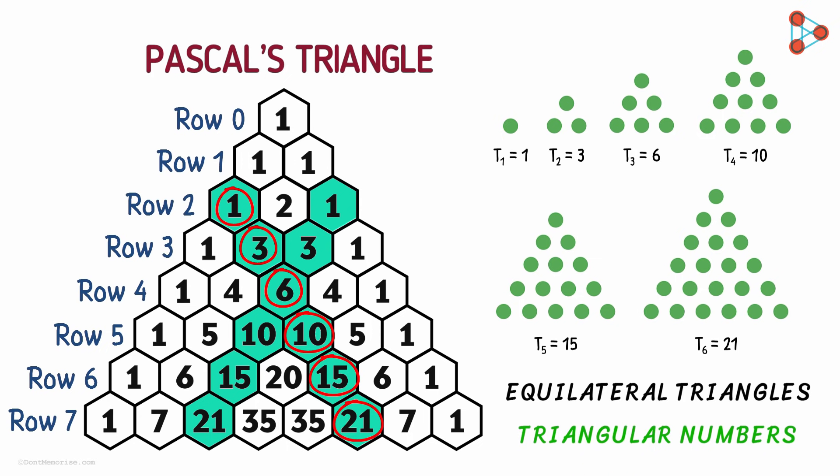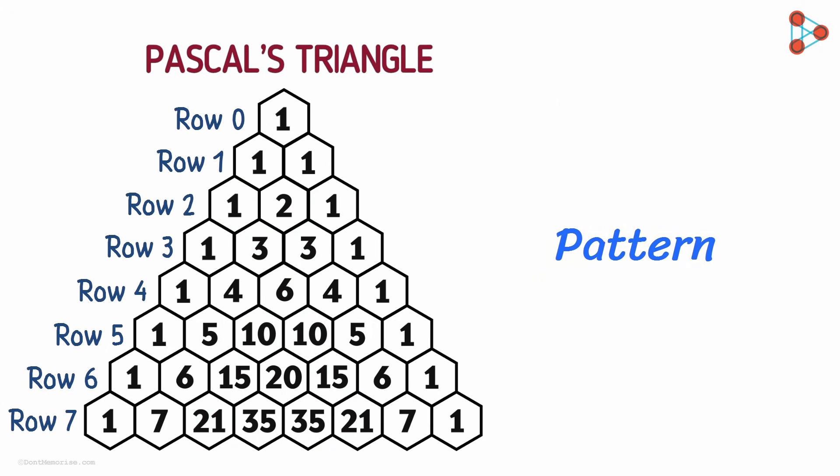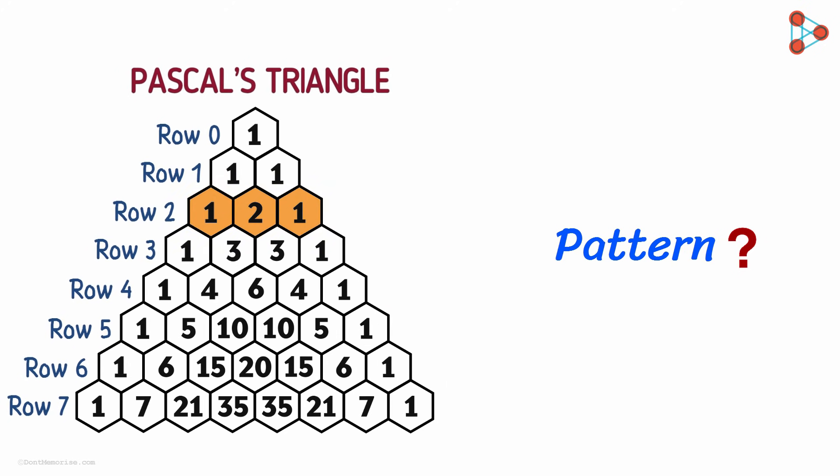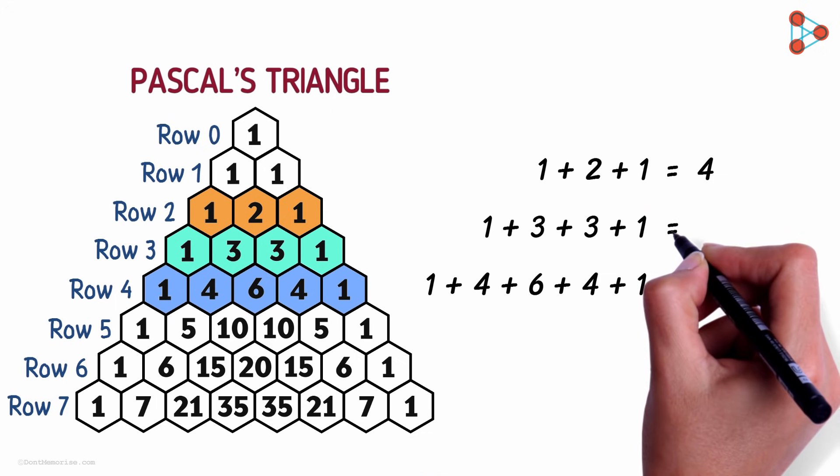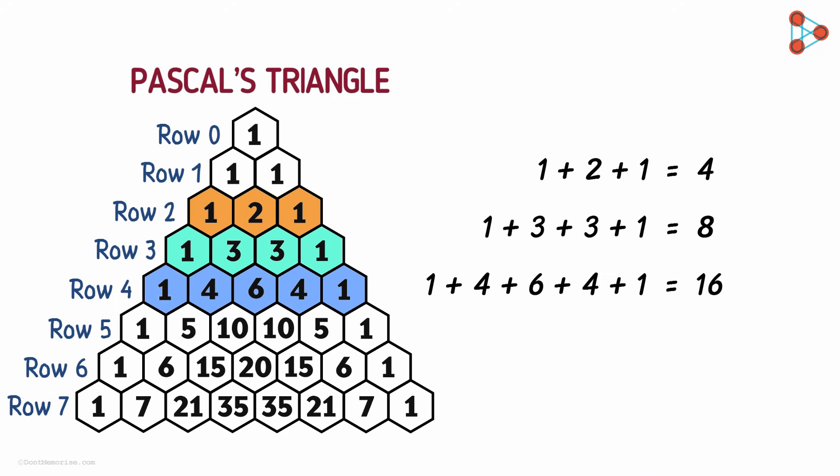Now let me ask you the same question again. Do you notice any other pattern? It could be anything. Give it a shot. I want you to observe each row. Let's see what happens when we add up the numbers in each row of the Pascal's triangle. Try adding up the numbers in the second row. Adding up these numbers gives us 4. Now can you try adding the numbers in the third and the fourth row individually? What numbers do you get? Yes, we get 8 and 16. Do you see a pattern here? 4, 8, 16 and so on.